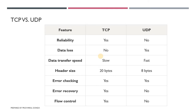The next difference is header size. TCP's header size is 20 bytes and UDP's header size is 8 bytes, because UDP only contains a few fields while TCP contains more information in the header. The next difference is error checking — error checking is provided by both TCP and UDP.